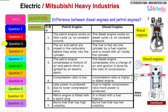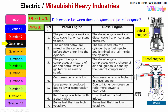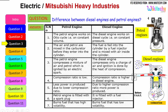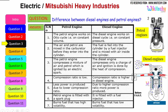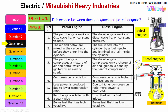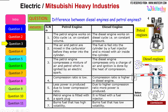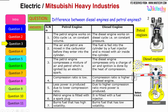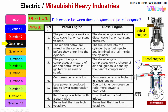The air and petrol are mixed in the carburetor before they enter the cylinder. In the diesel engine, the fuel is fed into the cylinder by a fuel injector and is mixed with air inside the cylinder. The petrol engine compresses a mixture of air and petrol which is ignited by an electrical spark, whereas the diesel engine compresses only a charge of air and ignition is done by the heat of compression.